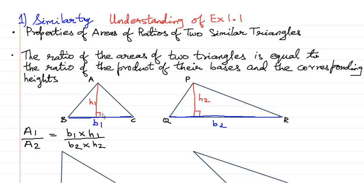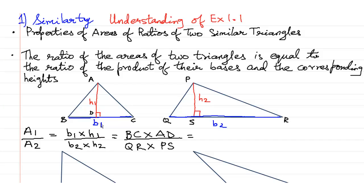Suppose the height of the first triangle is AD and the height of the second is PS. Then this would be BC (base 1) into AD (height 1) upon QR (base 2) into PS (height 2). Let us give them numerical values: base 1 is equal to 8 while height 1 is equal to 2. Base 2 is equal to 10 and height 2 is equal to 4. So this turns out to be 8 multiplied by 2 upon 10 multiplied by 4.